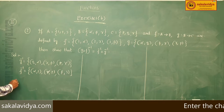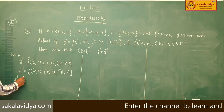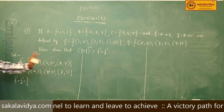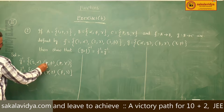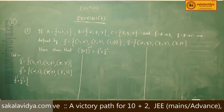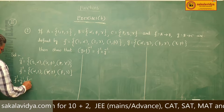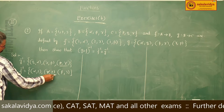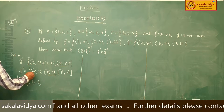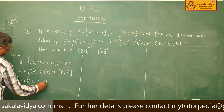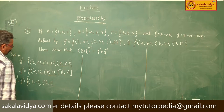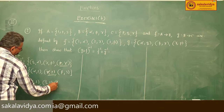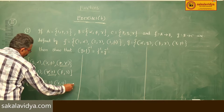Now let us find F⁻¹∘G⁻¹. F⁻¹∘G⁻¹ has the same domain as G⁻¹, that is {P, Q, R}. P maps to gamma, gamma maps to 2, so P maps to 2. Q maps to alpha, alpha maps to 1, so Q maps to 1. R maps to beta, beta maps to 3, so R maps to 3. This is equation 1.